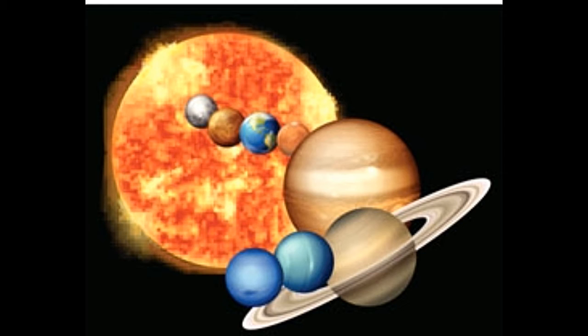Solar system is a minute component of the vast universe which was formed billions of years ago. It consists of the Sun and several celestial bodies revolving around it. These include planets and their satellites, asteroids, meteoroids, etc.